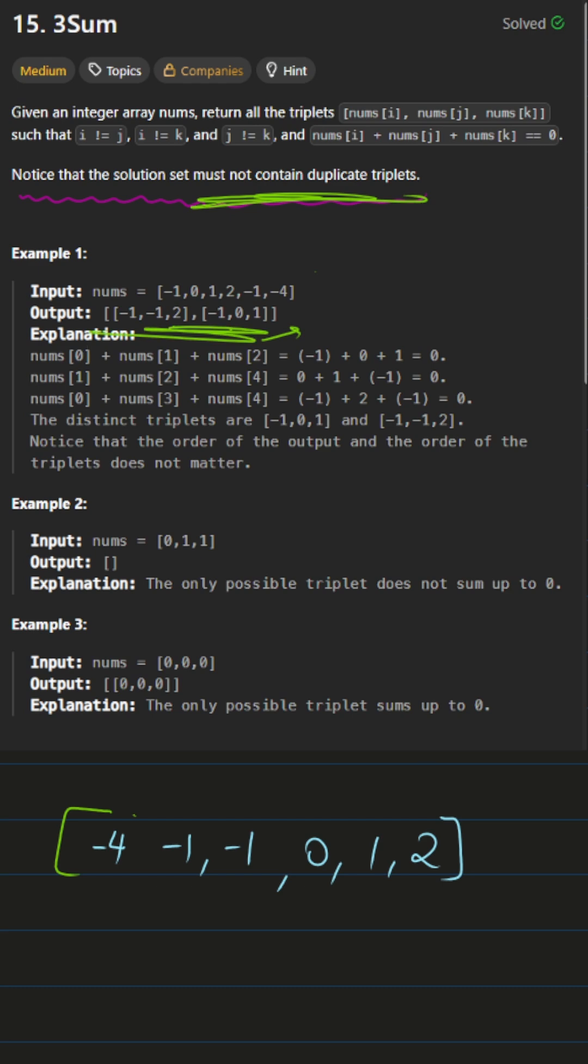So now how we'll do that: we'll use the two pointer approach with a for loop for i equals zero, i less than n. So i will start from here. Then j will be the i plus one element at all points and k will simply be the last element at all points. After that we'll simply start the for loop and then check if the sum of these three elements is greater than zero, less than zero, or equal to zero.